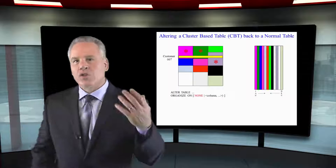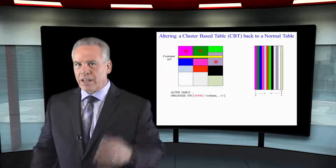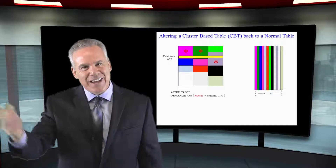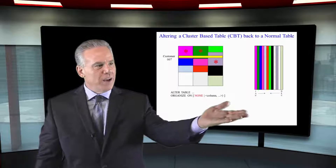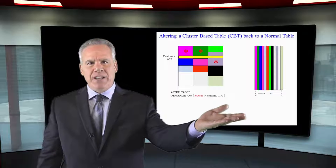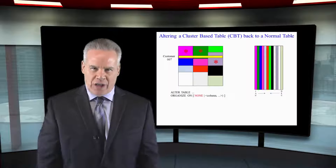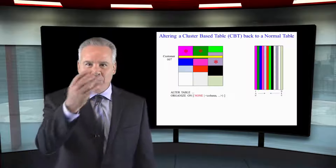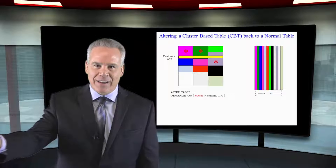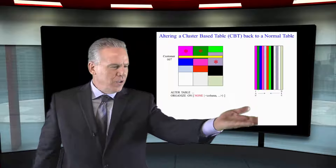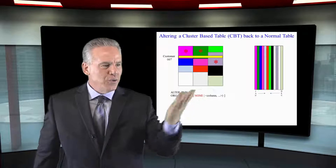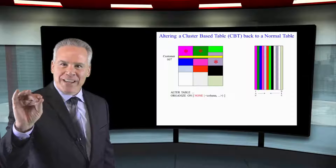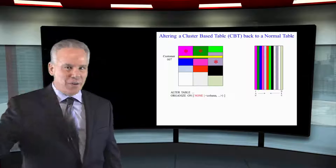Organizing it differently or sorting it differently and seeing what the differences are for this environment. You may come into a table and say, I made that a CBT, I organized it by these columns, and now it didn't work out so well. I need to bring this back. Here's how you do it: you can ALTER the table and ORGANIZE ON NONE, and that will take the CBT and no longer make it a CBT.